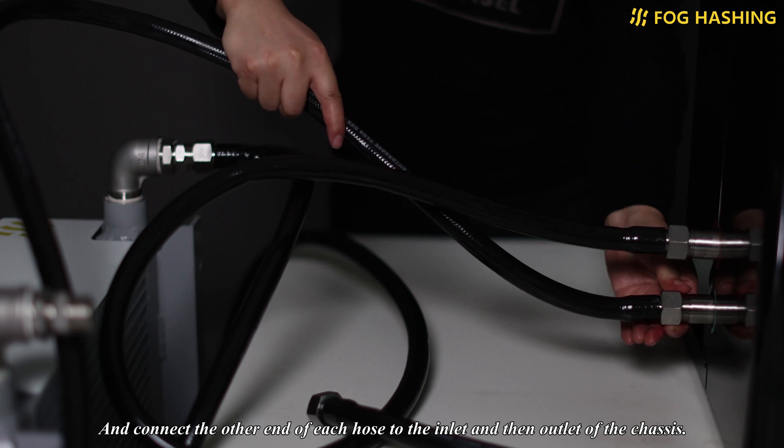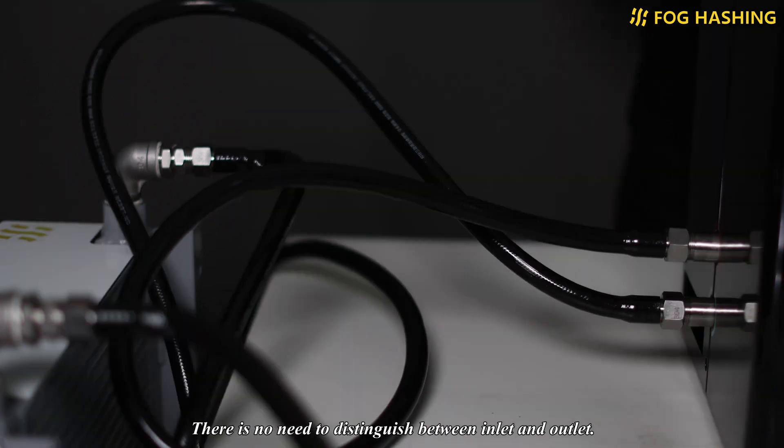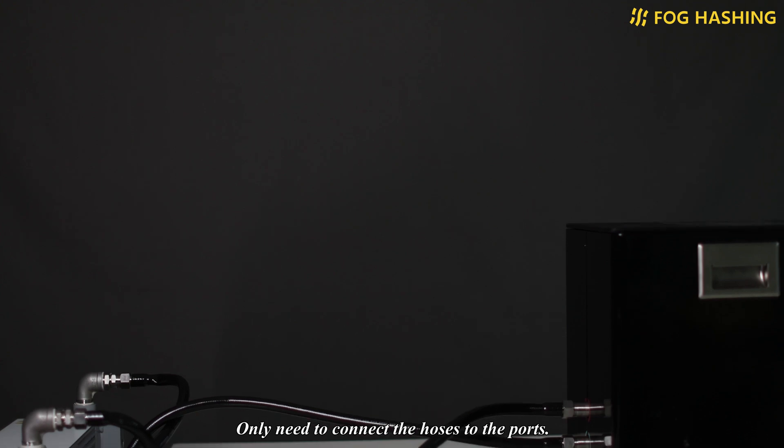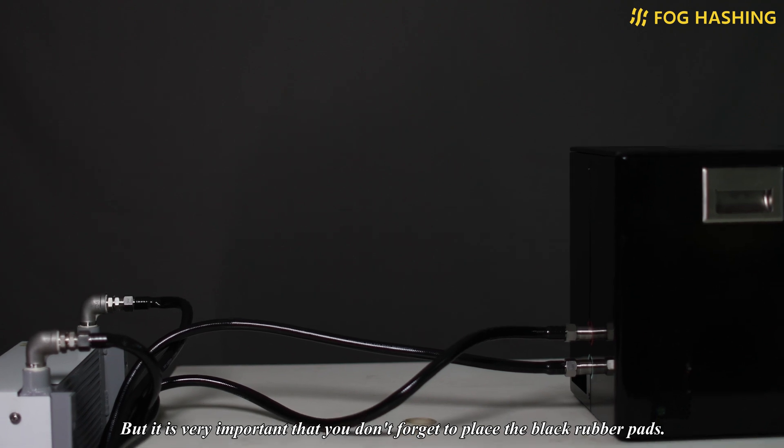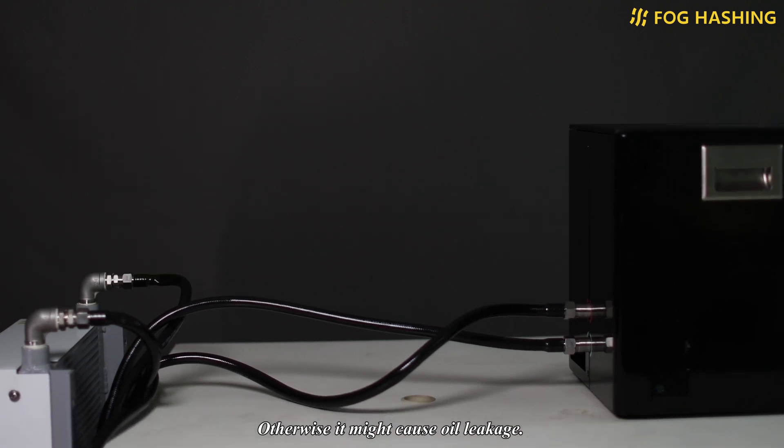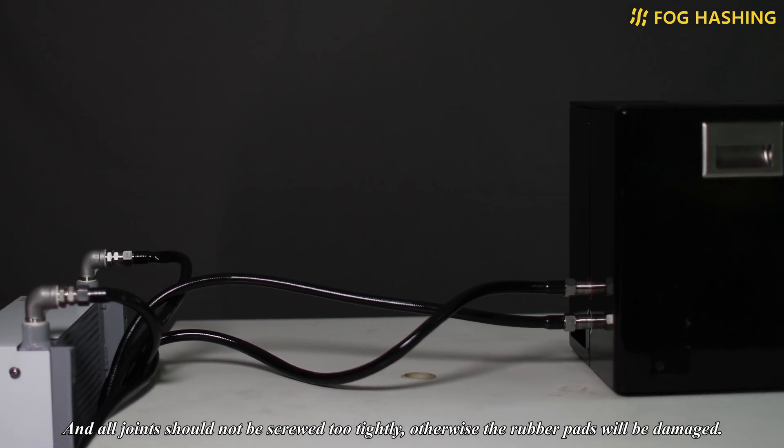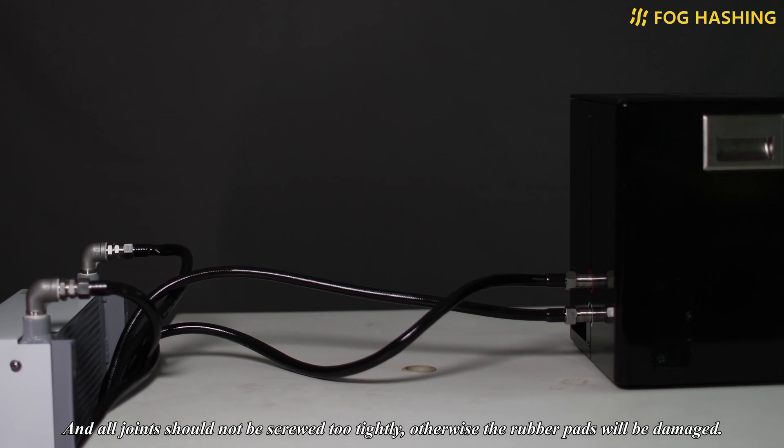There is no need to distinguish between inlet and outlet, only need to connect the hoses to the ports. But it is very important that you don't forget to place the black rubber pads, otherwise it might cause oil leakage. And all joints should not be screwed too tightly, otherwise the rubber pads will be damaged.